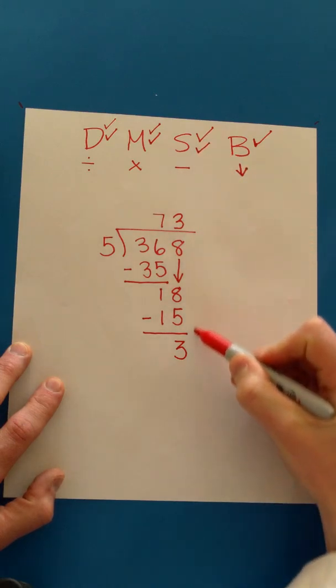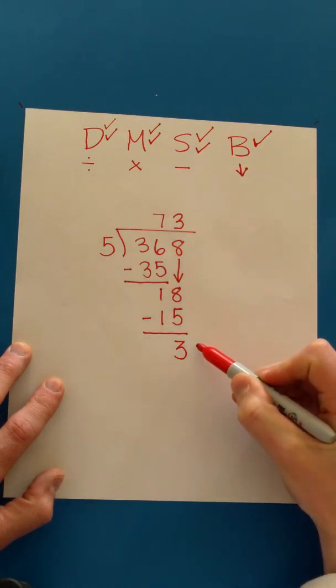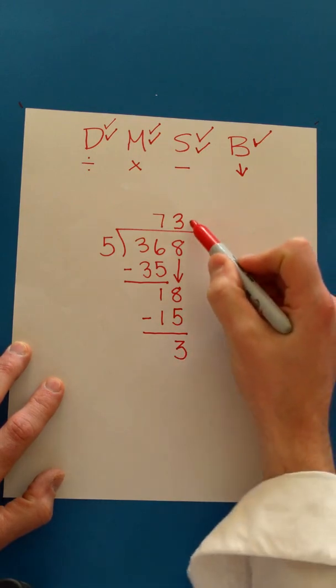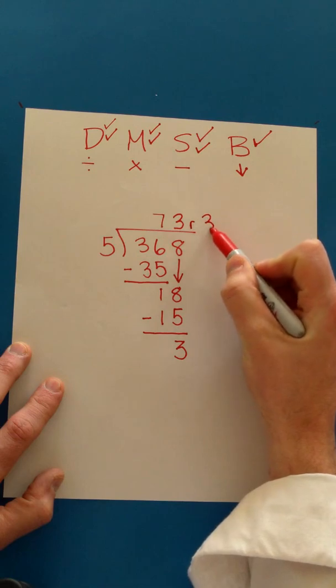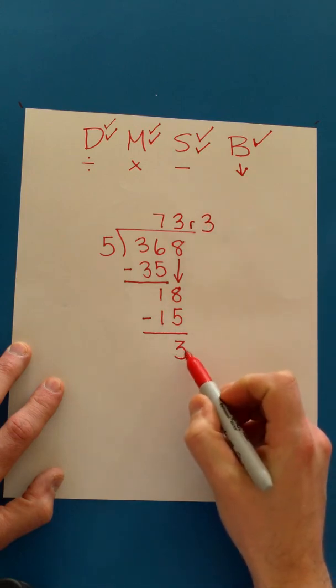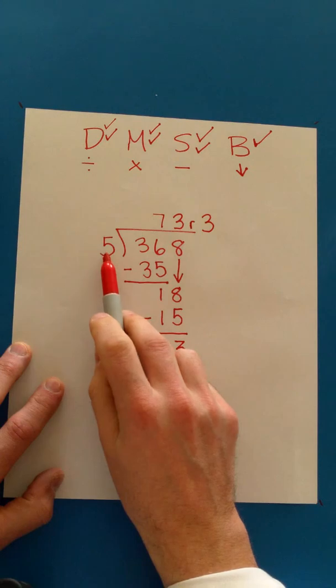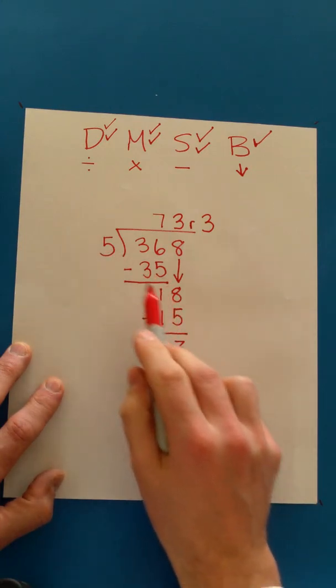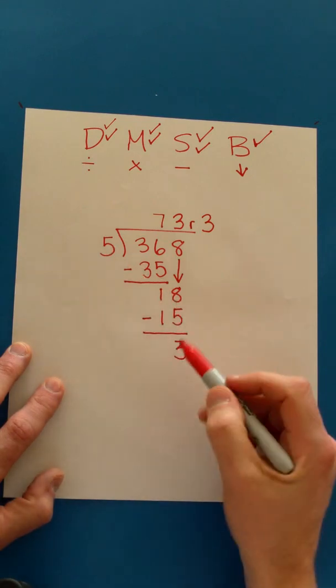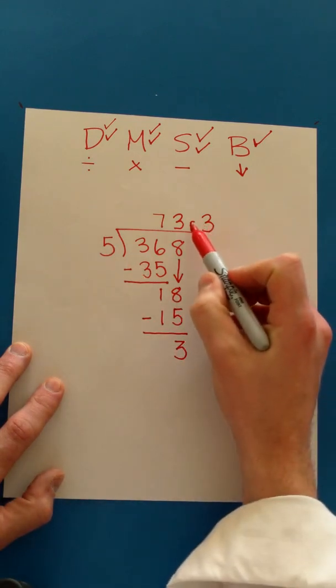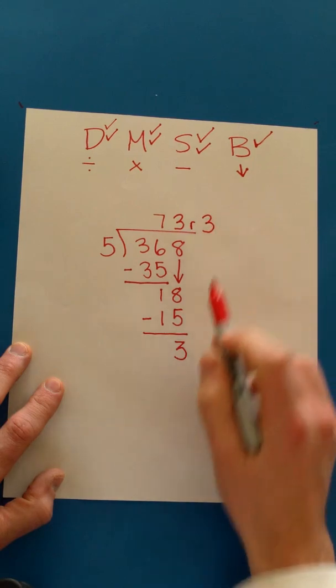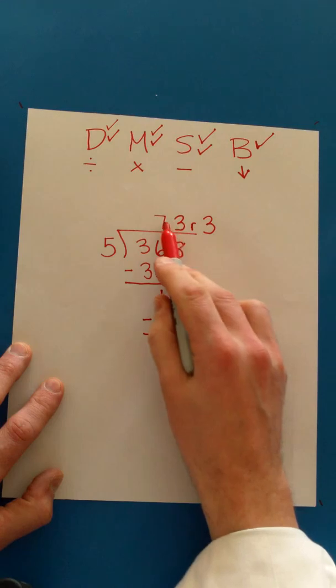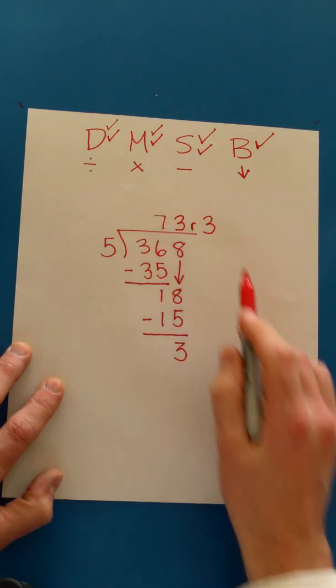And do we have anything to bring down? No, we don't. And if there's nothing to bring down, but you have a number here, that's your remainder. Always remember that your remainder needs to be less than your divisor. It can never be more than this number or equal to this number. And if it's zero, you don't need to write down remainder zero. So 368 divided by 5 is 73 remainder 3.